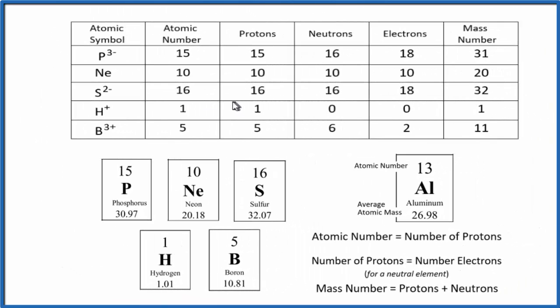So these are the answers that you should have gotten. There are two things I want to point out. One is with neon. We have Ne. There's no plus or minus. That means the number of protons will equal the number of electrons. This is a neutral element, so I hope I didn't fool you there.